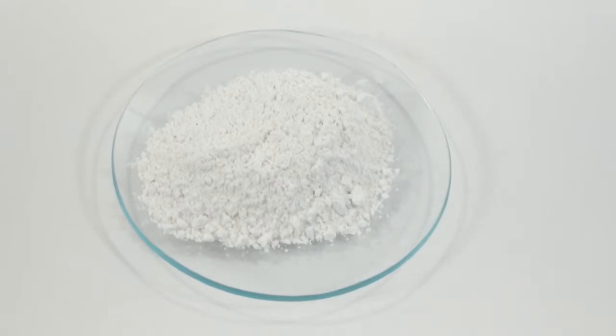Plaster of Paris is the hemihydrate form of calcium sulfate, meaning that for every molecule of water in the crystalline structure, there are two calcium sulfates. We're used to thinking of hydrates as the number of molecules of water per each compound, but it doesn't make sense to talk about half a molecule of water, at least not practically.